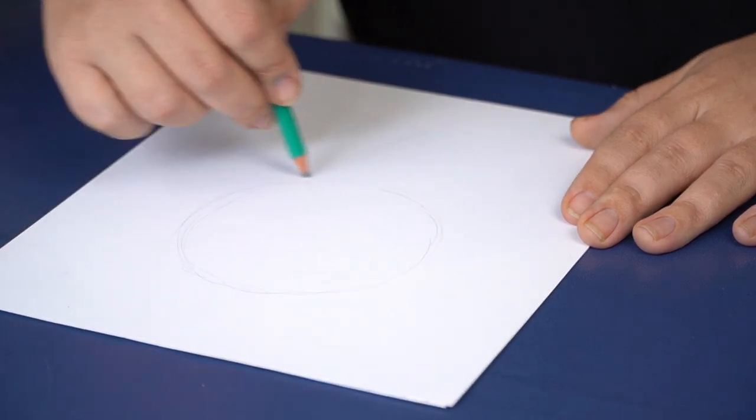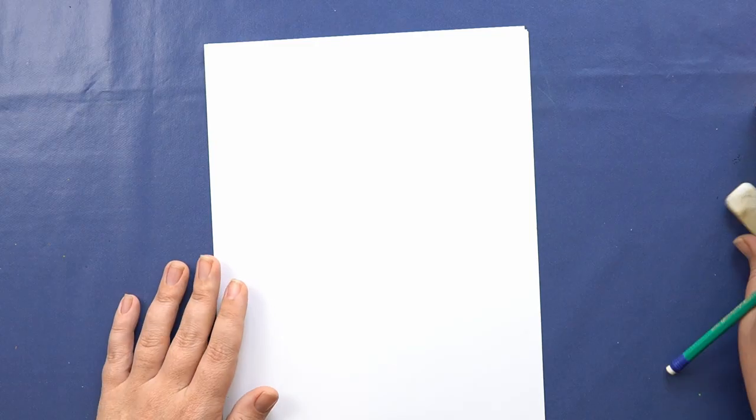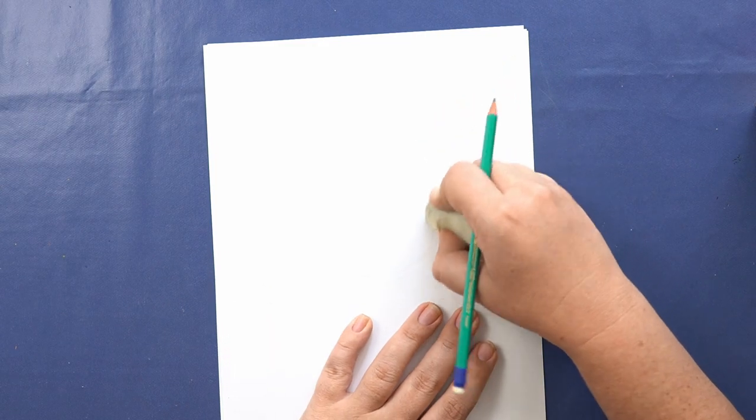I have my circle taking up my middle third. If you're not confident to draw a circle you could trace around a small bowl or even use a compass.